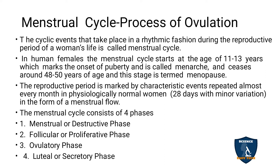The reproductive period is marked by characteristic events repeated almost every month in a physiologically normal woman — that is 28 days, with minor variation — in the form of menstrual flow. So from 11 to 13 years until the menopause stage, these menstrual cycle events repeat. Mostly every 28 days, but there can be a minor variation of 1 to 2 days or even up to 1 week before or after.